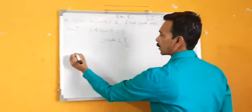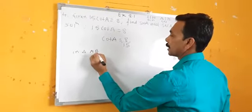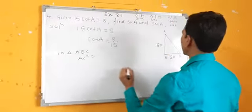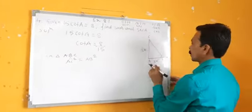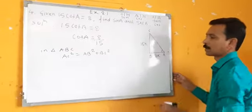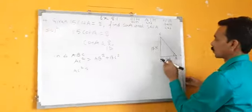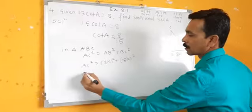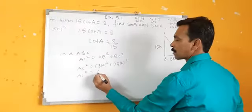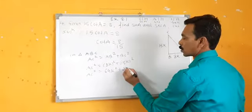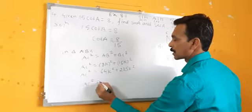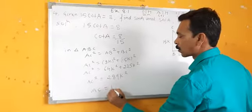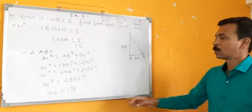Find the third side. In triangle ABC, I have to find the hypotenuse. AC square is equal to AB square plus BC square. AC square is equal to 8K whole square plus 15K whole square, which is 64K square plus 225K square. AC square is equal to 289K square. So AC is equal to 17K.